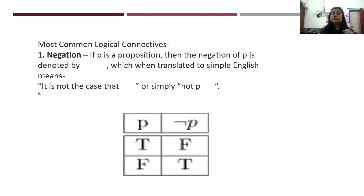Today I will take a look at the most common logical connective: negation. If P is a proposition, then the negation of P is denoted by the negation symbol — not P. It means it is not the case that P, or simply not P.